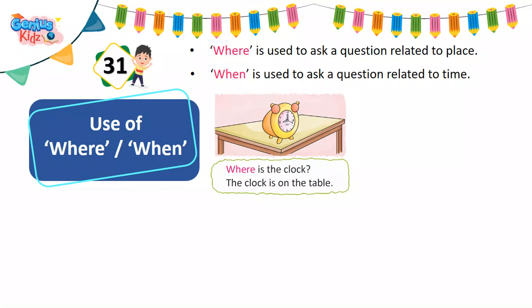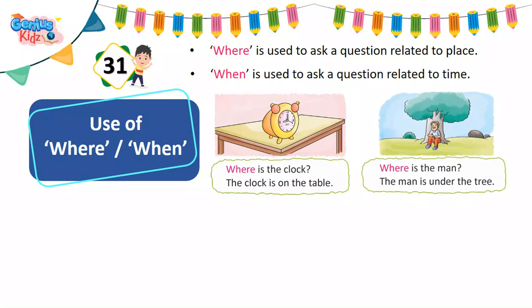Where is the clock? The clock is on the table. Where is the man? The man is under the tree.